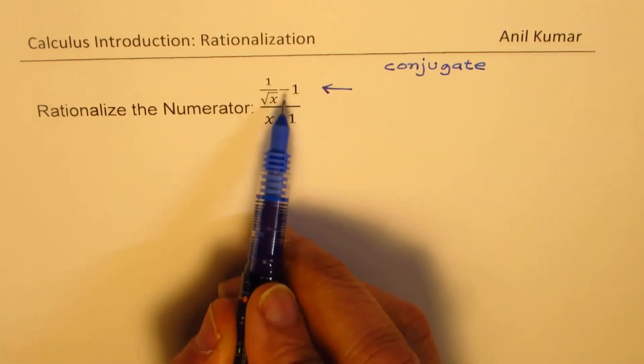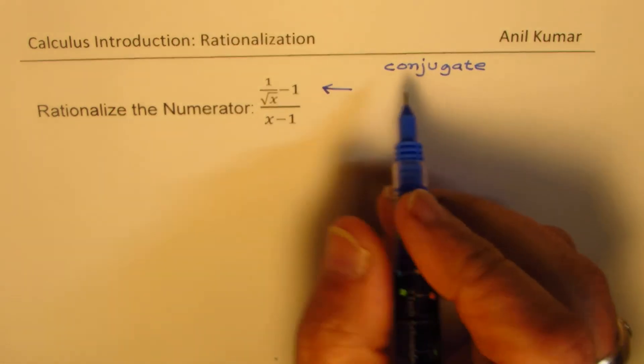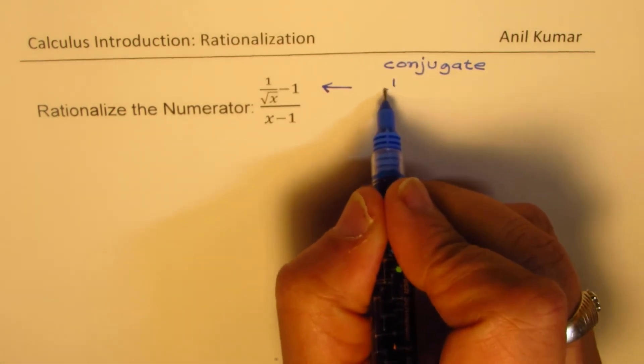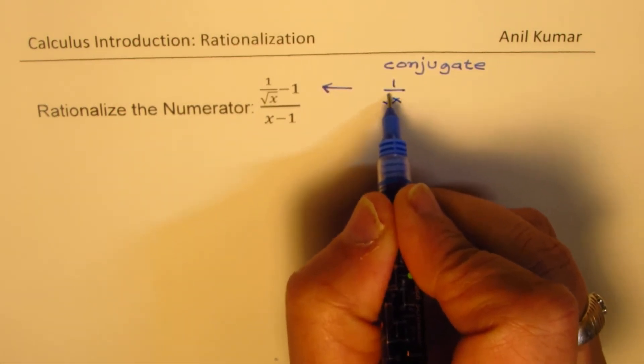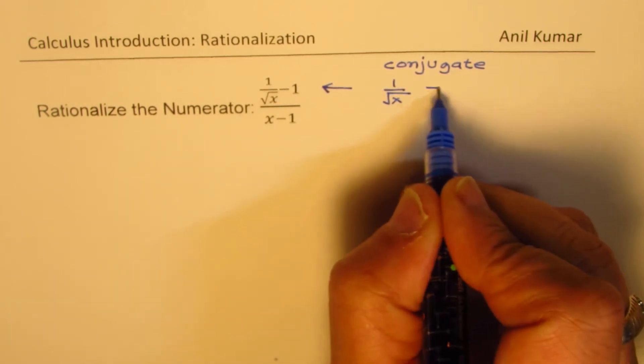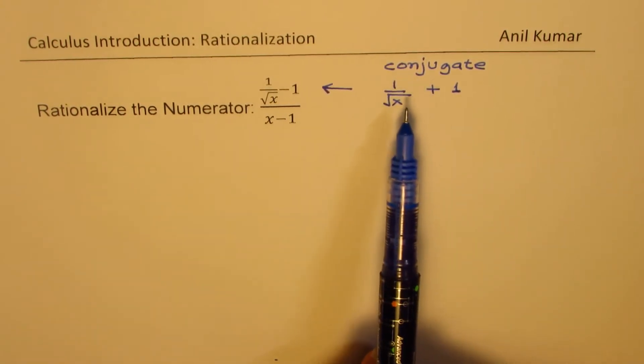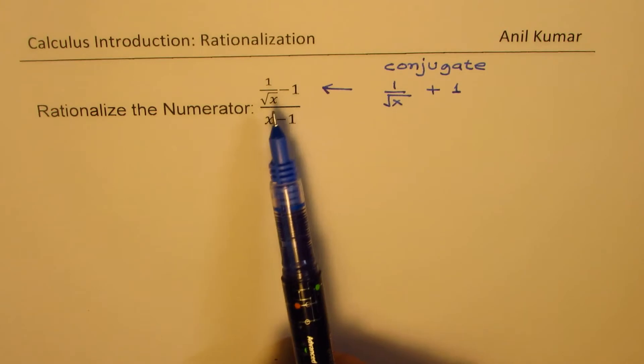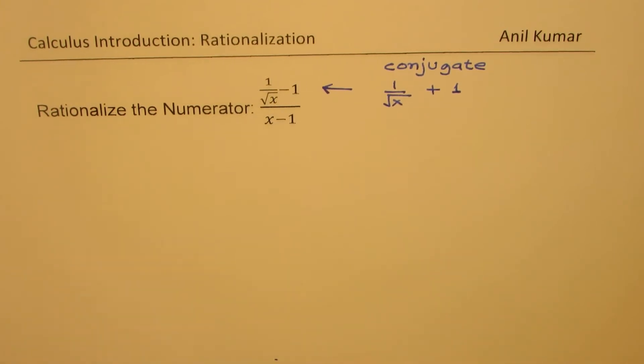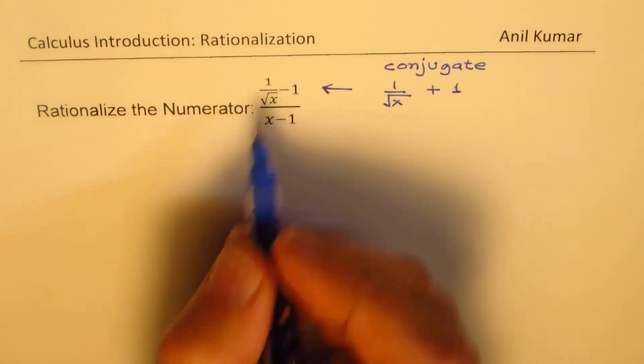We need to rationalize the numerator. First thing, what we look into is the conjugate of numerator. To find conjugate, we just change this particular sign. So the conjugate here is 1 over square root of x, and this sign will be changed to positive. Let's begin.